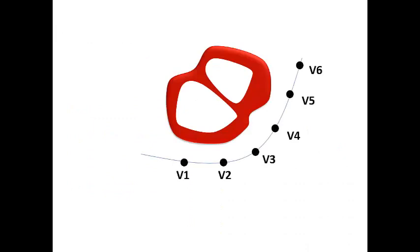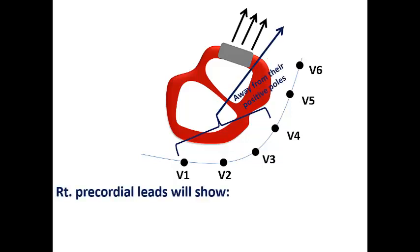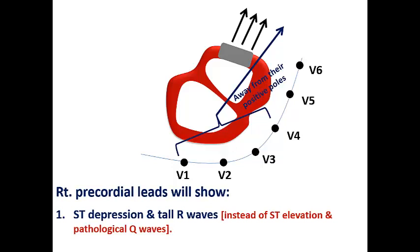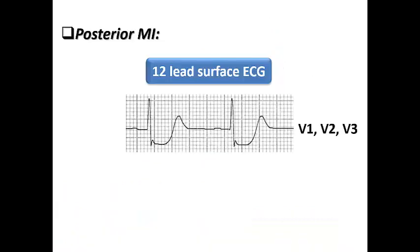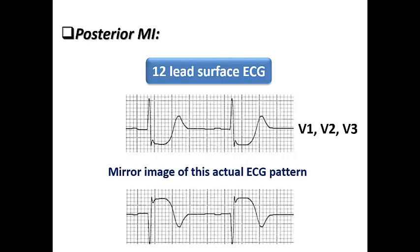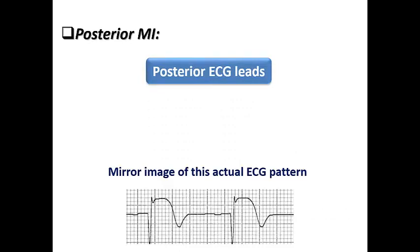Why do these changes occur in posterior STEMI? In this cross-section of the heart with the 6 precordial leads, when there is infarction in the posterior wall of the left ventricle, the current of injury is directed posteriorly towards the back of the patient. These ECG leads show the injury away from their positive poles, resulting in ST depression and tall R-wave instead of ST elevation and pathological Q-wave. That is why posterior MI is actually a STEMI, not a non-STEMI. Upright T-waves appear instead of T-wave inversion in the evolving stage. The 12-lead surface ECG is like a mirror image of the actual ECG pattern that would be seen on posterior ECG leads.